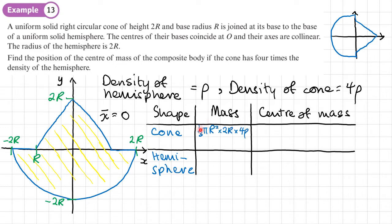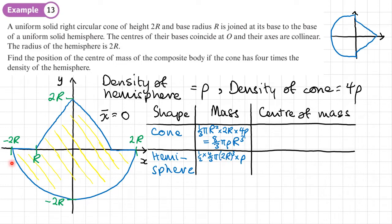Starting with the cone: its mass equals volume times density. The volume is one-third pi times R squared times the height 2R, then multiplied by density 4 rho, which simplifies to 8/3 π ρ R³. For the hemisphere: the mass is one-half of four-thirds pi times (2R)³ times density rho, which simplifies to 16/3 π ρ R³.